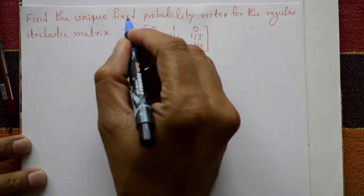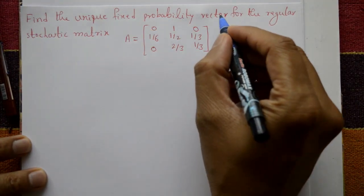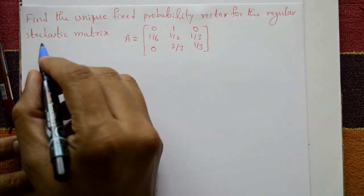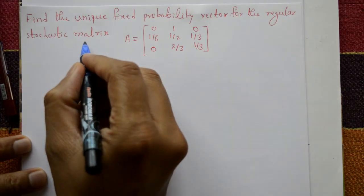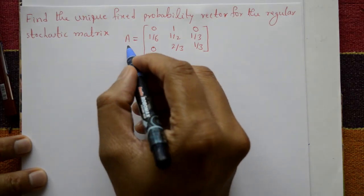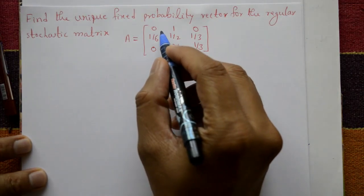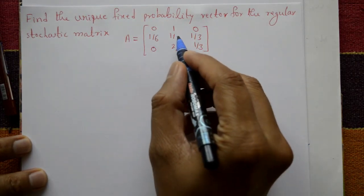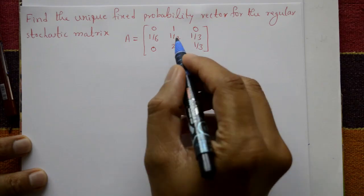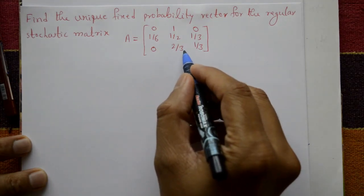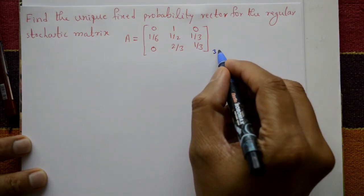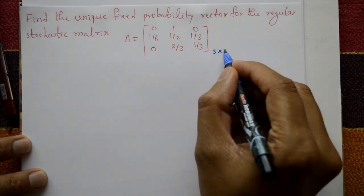Find the unique fixed probability vector for the regular stochastic matrix. Matrix A is given as the 3x3 matrix: row 1 is [0, 1, 0], row 2 is [1/6, 1/2, 1/3], row 3 is [0, 2/3, 1/3].